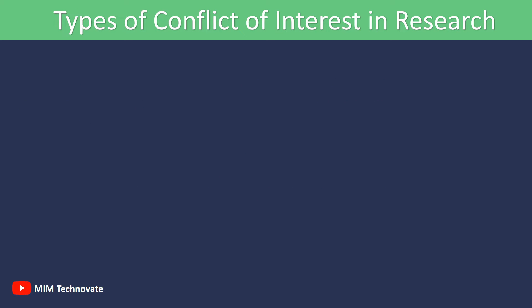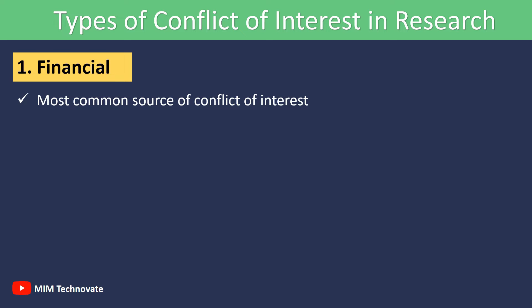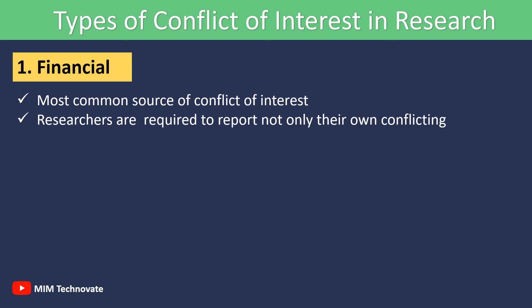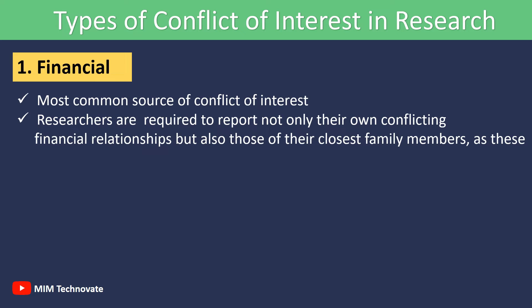Types of Conflict of Interest in Research. 1. Financial. Financial connections are the most common source of conflict of interest in research, since they can impact an individual's thinking and consequently affect research outcomes. Researchers are typically required to report not only their own conflicting financial relationships but also those of their closest family members, as these can represent indirect conflicts of interest.